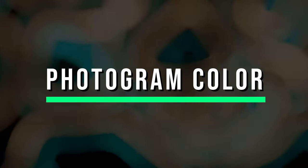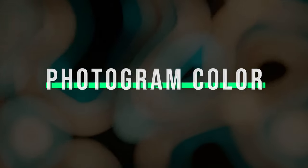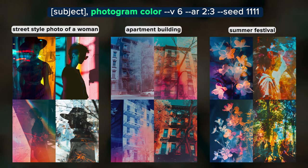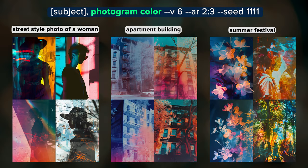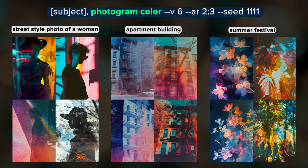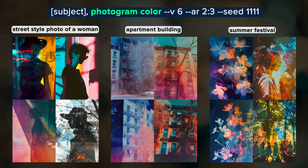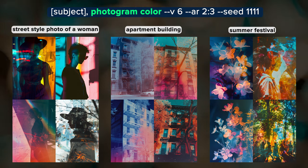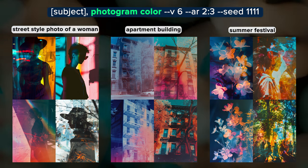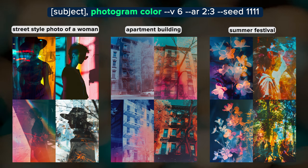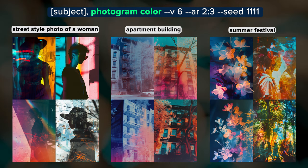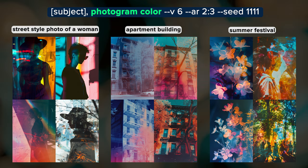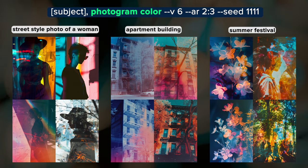Our first style is Photogram Color. A photogram is a camera-less image made by placing objects directly onto light-sensitive material like photographic paper and then exposing them to light. This results in a negative shadow image with varying tones based on object transparency. I really like the mixture of silhouette and double exposure effect that this produces, and because I've included the word 'color' in the prompt, we also get vibrant colors. If you want more monotone images, just remove the word 'color' from the prompt.